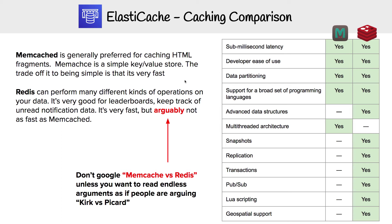For ElastiCache, we have two different engines we can launch: we have Memcached and Redis. There is a difference between these two engines — we don't really need to know all the differences in great detail, but we do have this nice big chart that shows you that Redis ticks more boxes than Memcached.